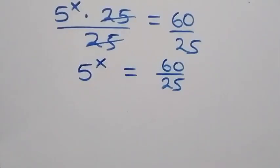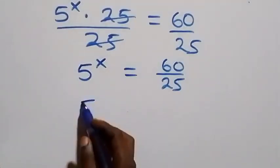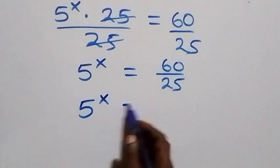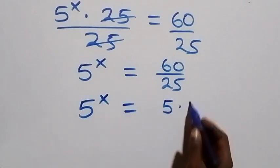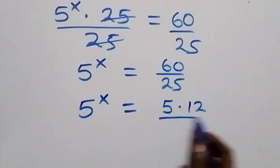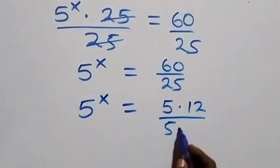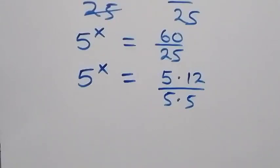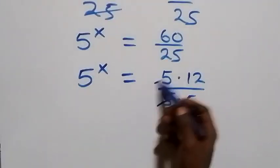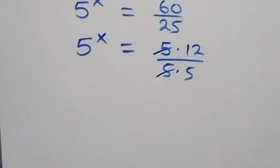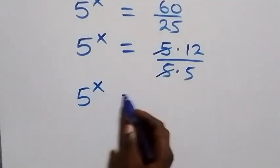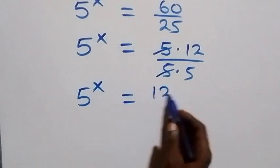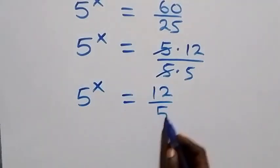In the next step, this can also be written as 5 raised to power x equals 60, expressed as 5 times 12, over 25, expressed as 5 times 5. The 5s cancel each other and we are left with 5 raised to power x equals 12 over 5.